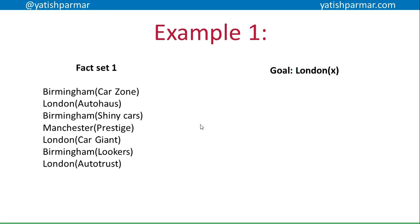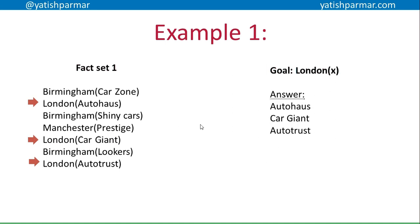For example, I've got my fact set one on the left-hand side — a list of car dealers in different cities — and my goal on the right-hand side is London X. So that's: find any dealer in London. So my system will go through the fact set: Birmingham — not in London. Auto House — is in London. Shiny Cars — not in London. Prestige — no. Car Drive — yes. Lucas — not in London. Auto Trust — yes in London. And I get my result.